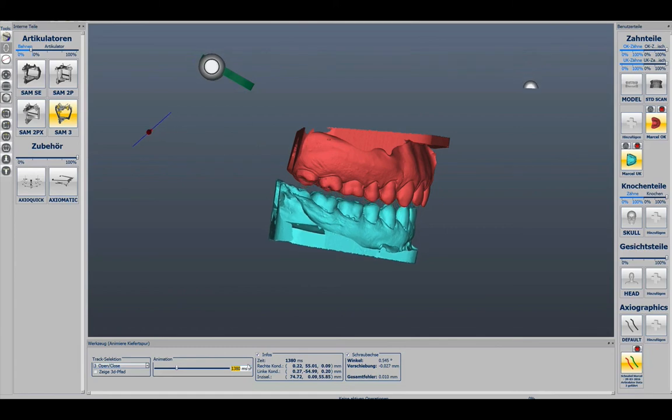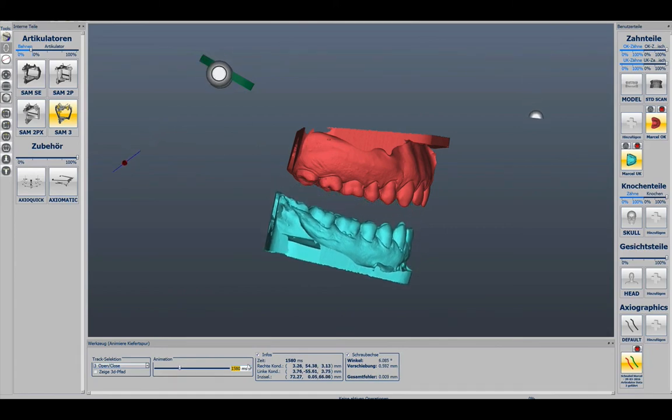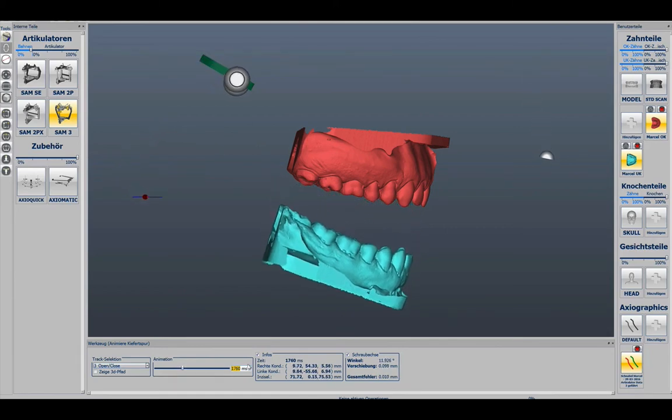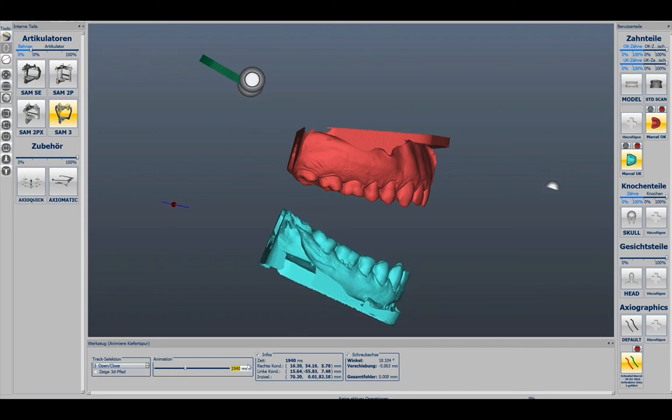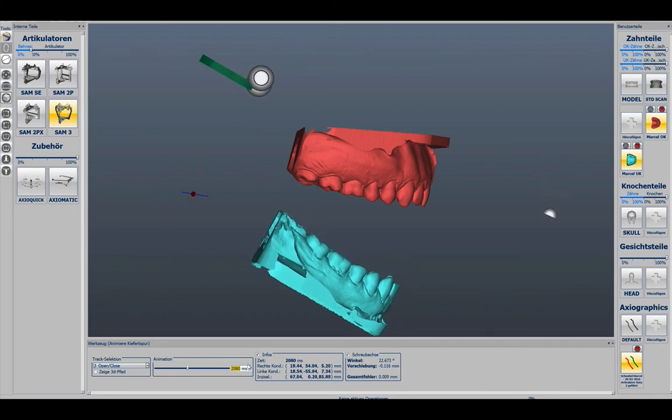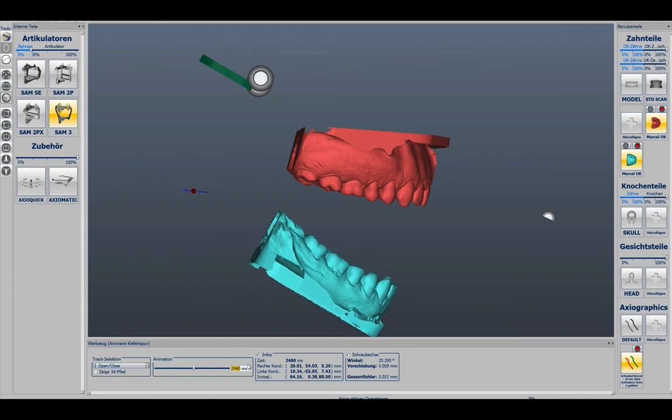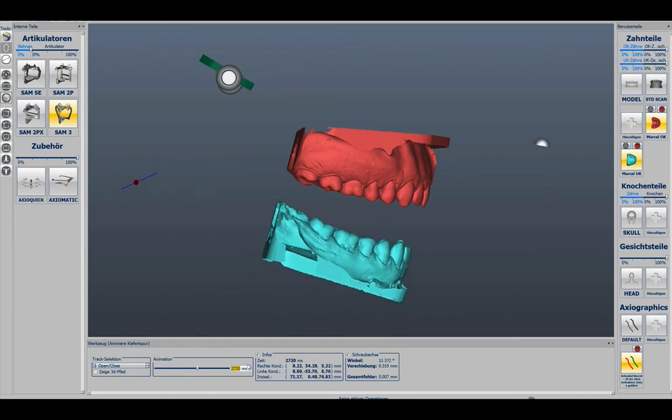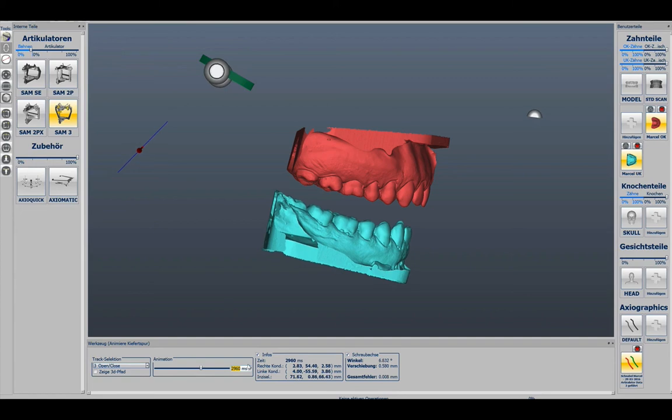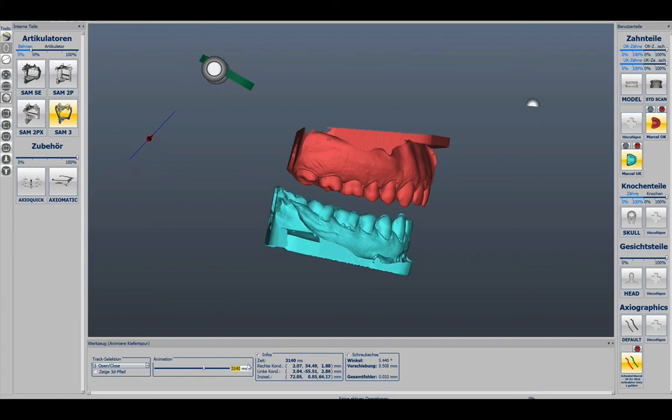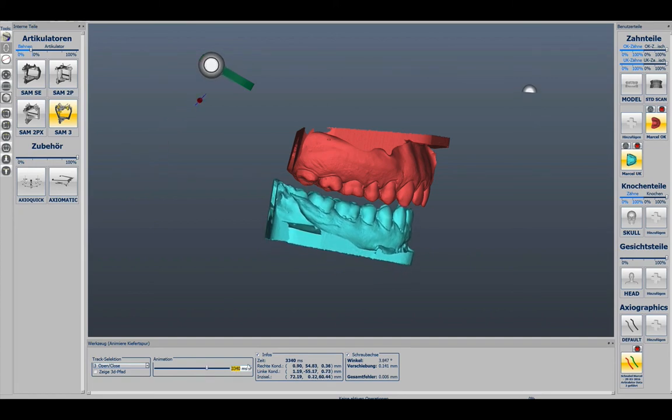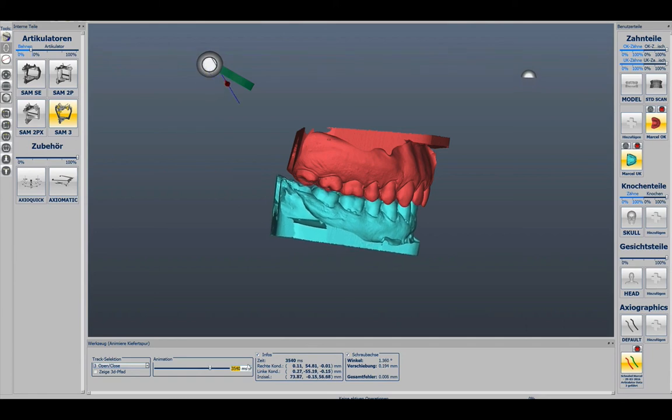Finally, a case where the axis doesn't stay in the condyles. It is far away from the beginning. In such a case you will not be able to determine an individual axis by axiography on the patient because he does a parallel opening and translation from the first millisecond on.